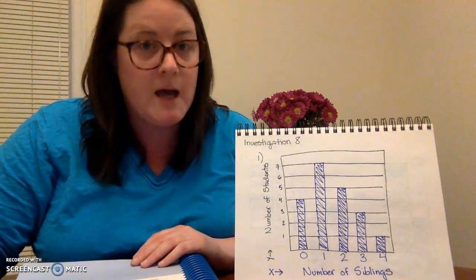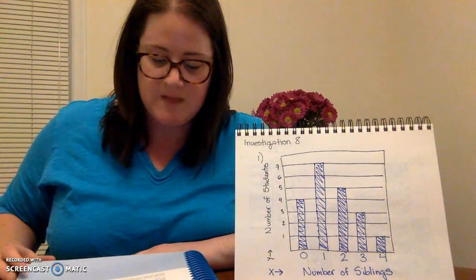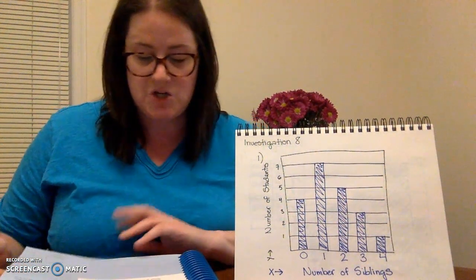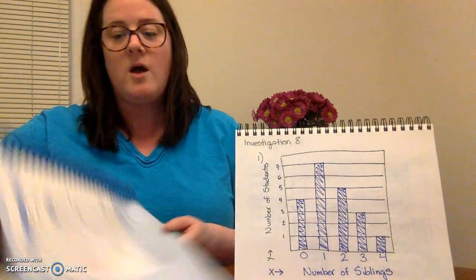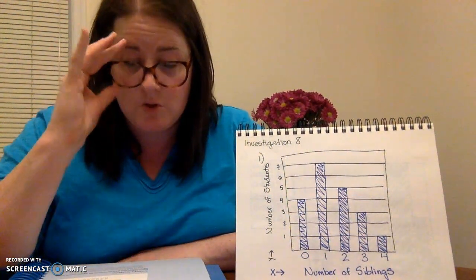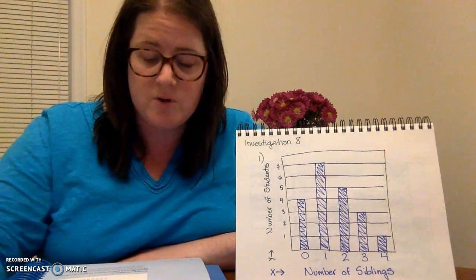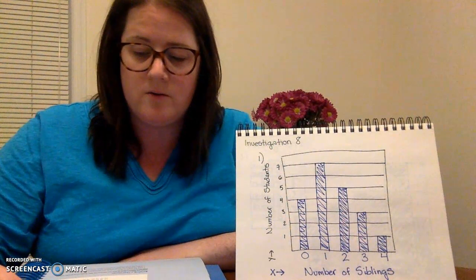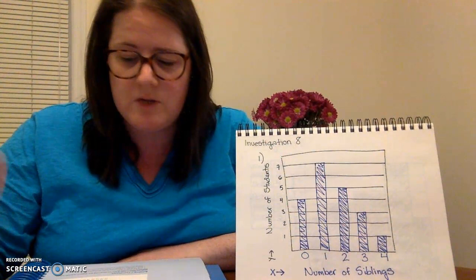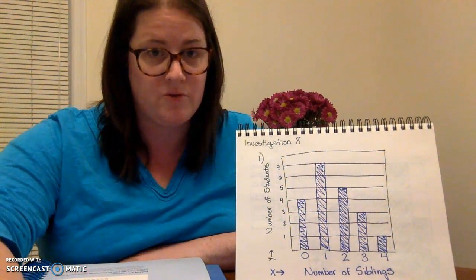Now we will practice making bar graphs using a new situation. 20 children in a class were asked how many siblings, brothers and sisters, each had. The data from their responses as well as a frequency table to organize the data are shown below. So we have our number of siblings: 2, 3, 0, 1, 1, 3, 0, 4, 1, 2, 0, 1, 1, 2, 2, 3, 0, 2, 1, 1, and then they have made a frequency table for you.